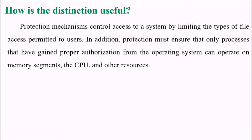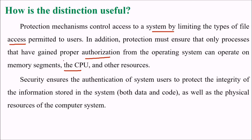How is this distinction useful? The protection mechanism controls access to a system by limiting the type of file access permitted to users. In addition, protection must ensure that only processes that have gained proper authorization from the operating system may operate on memory segments, the CPU, and other important resources.